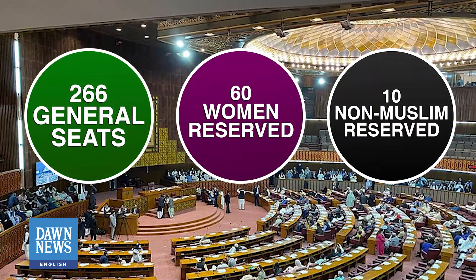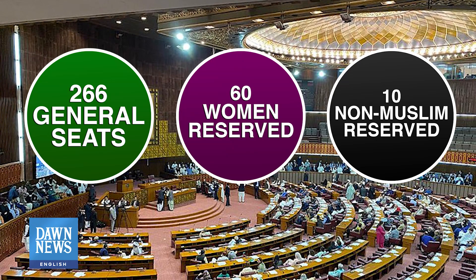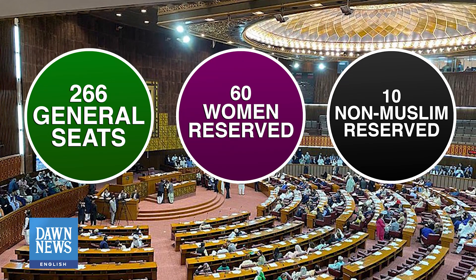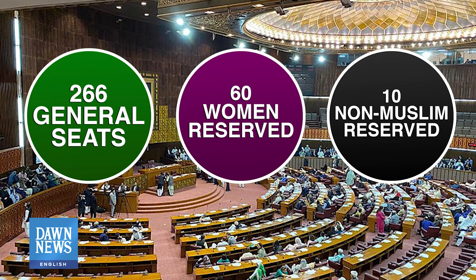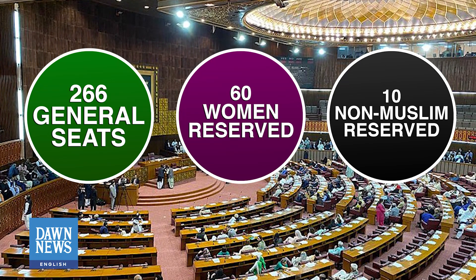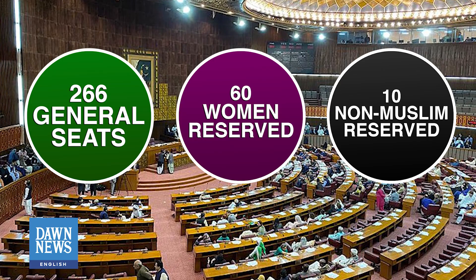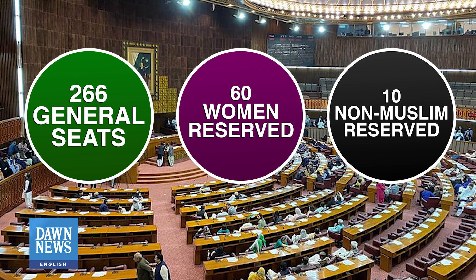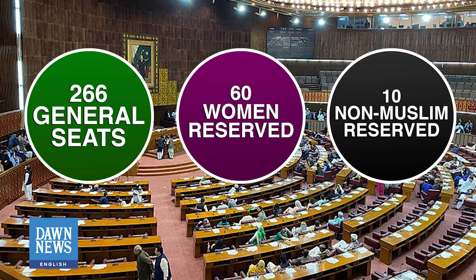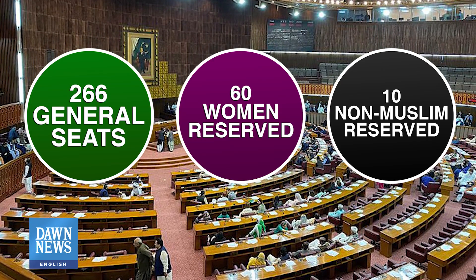The National Assembly comprises 266 general seats, 60 reserved for women, and 10 reserved for non-Muslims. In provincial assembly constituencies,